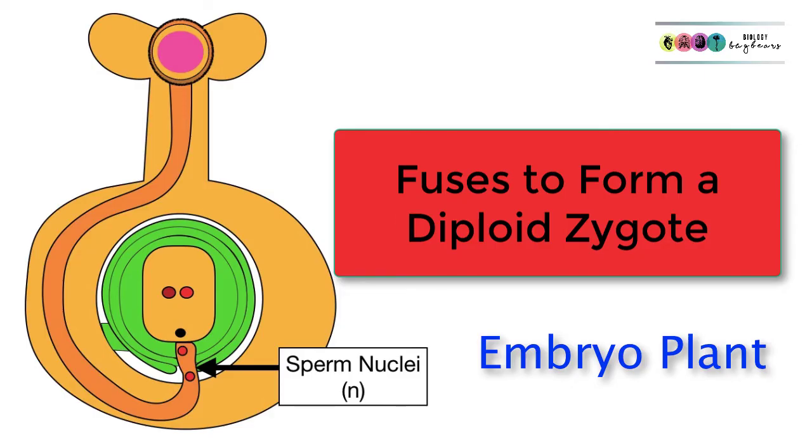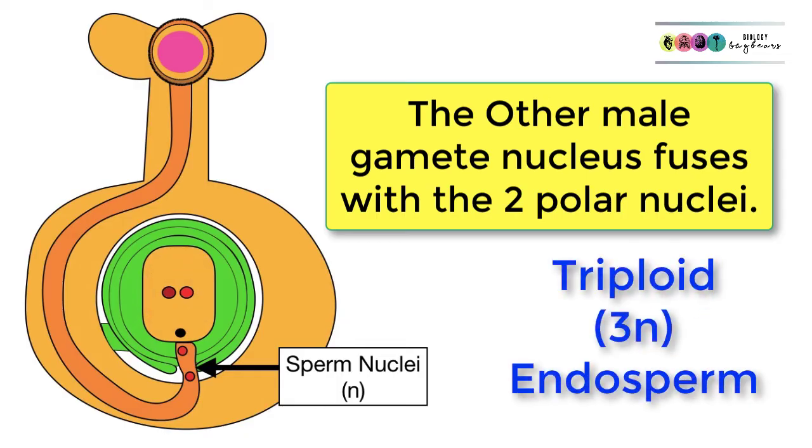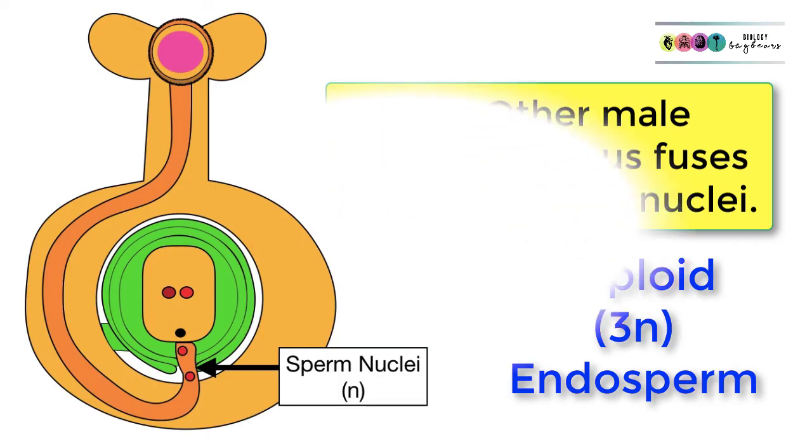The second sperm nucleus will fuse with those two polar nuclei to form this triploid—three sets of chromosomes—this triploid endosperm, and this is going to provide nourishment for that developing embryo.